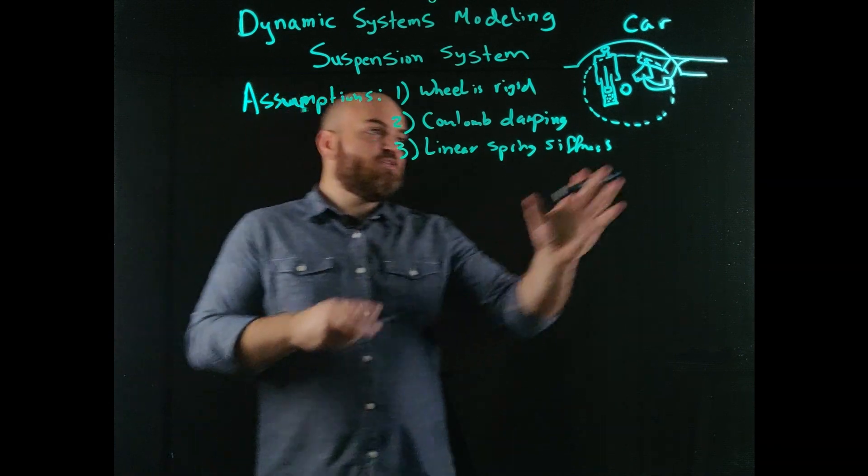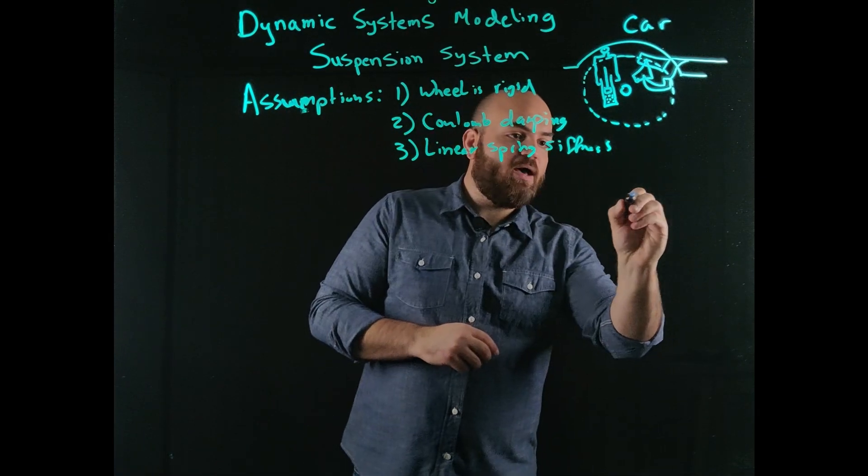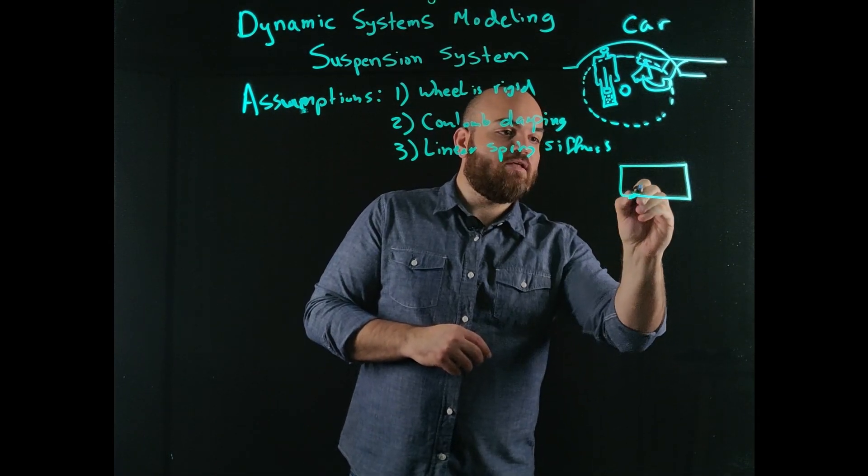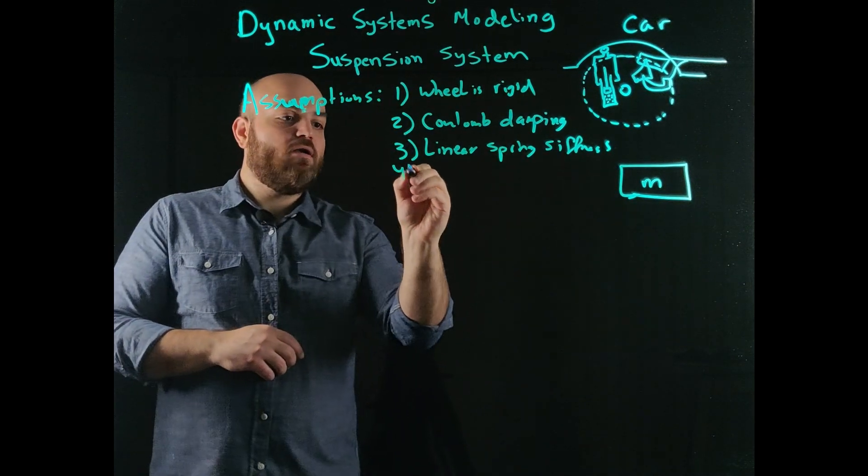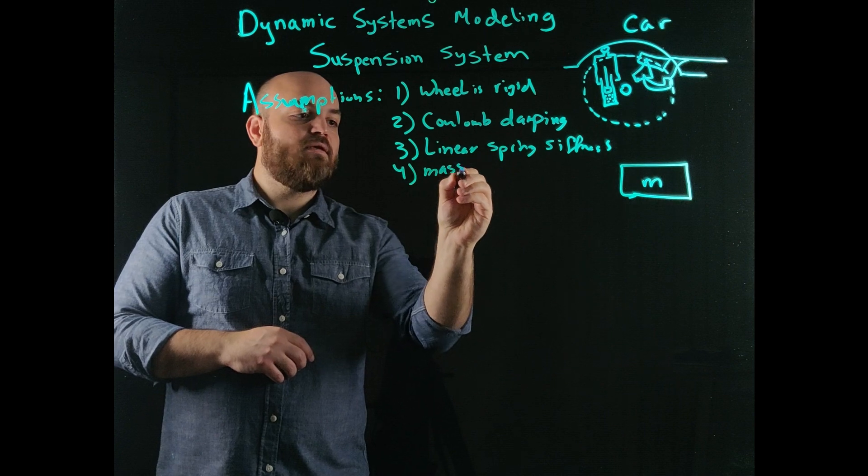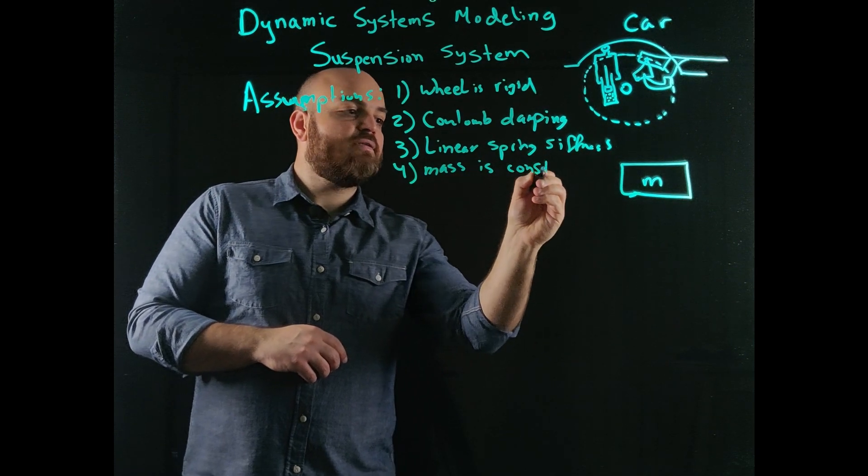These are my three assumptions. So how do I model this? Okay, so I have my vehicle itself has a mass. Oh, by the way, four, mass is constant.